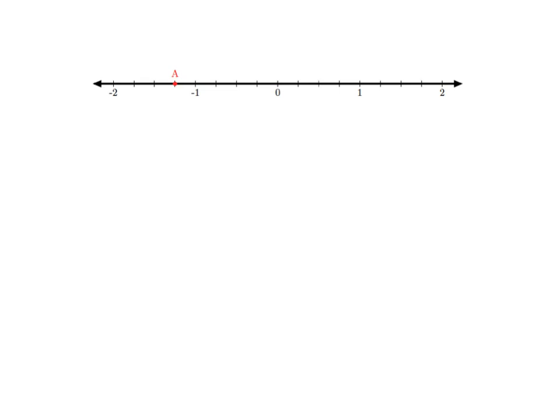The last thing I want us to look at is that you can obviously get negative numbers with fractions and there is no problem — they work in exactly the same way. At this point A on the number line, what fraction are we dealing with? Every unit has been divided up into four pieces, so we're dealing with quarters. Where is A? We've gone one, two, three, four, five of those quarter steps, but to the left. So we're talking about negative five over four.